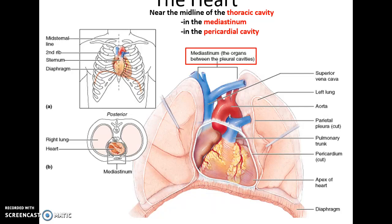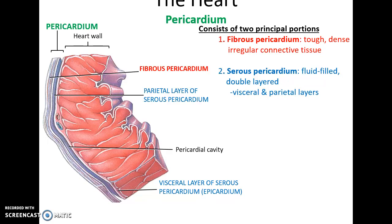The pericardium has two main portions. There's the outer superficial thick dense portion called the fibrous pericardium, made up of tough dense irregular connective tissue. Deep to that is the serous pericardium, a two-layered structure filled with a little bit of fluid. There is the parietal layer that lies against the fibrous pericardium and a visceral layer that lies on the heart itself.